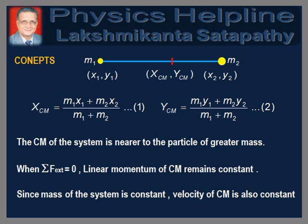Before proceeding to solve the problem, let us recall the related concepts. To find the coordinates of the center of mass of a system of two particles, consider two particles of masses M1 and M2 whose position coordinates are x1, y1 and x2, y2 as shown in the figure. The coordinates of the center of mass of the system are given by equations 1 and 2. It may be noted that the center of mass is nearer to the particle of greater mass, as indicated in the figure.